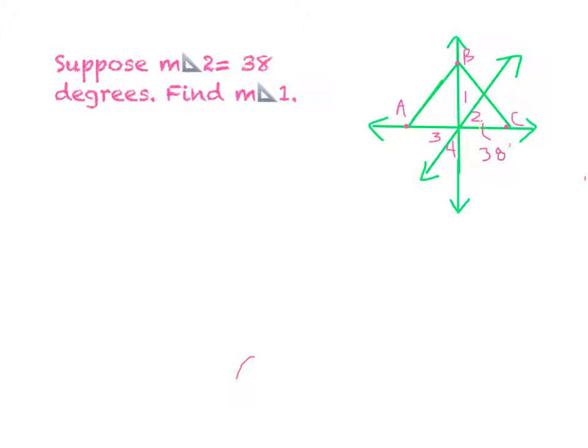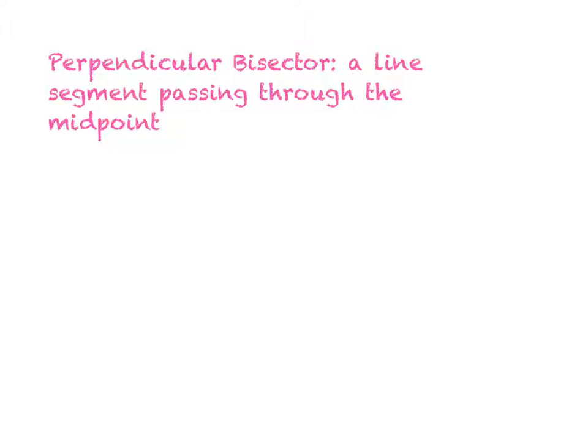we could subtract that by 90, because this triangle is being divided by a perpendicular bisector. And a perpendicular bisector is a line segment passing through a midpoint.